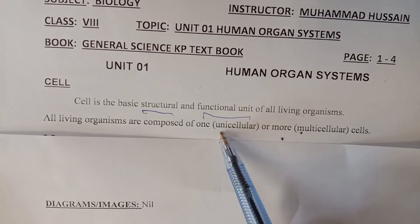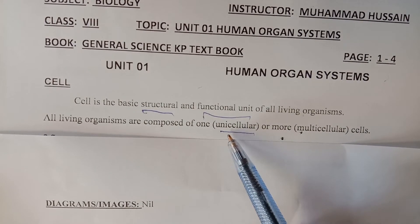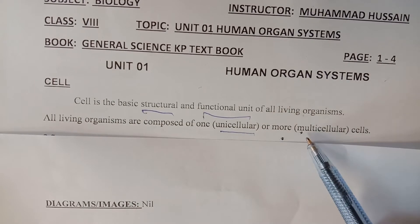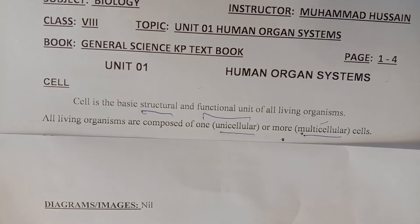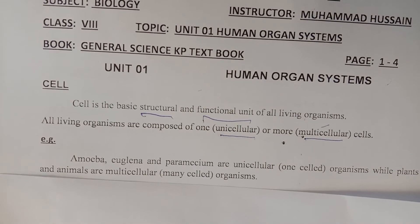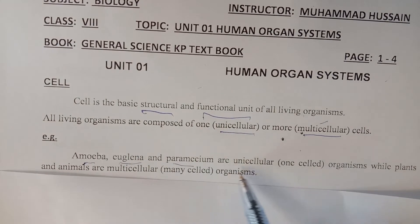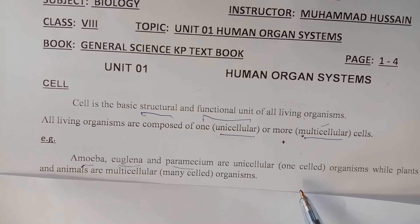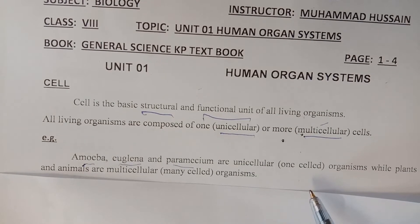We have two types of living organisms. Unicellular organisms are those containing only one cell. Examples of unicellular organisms include amoeba, euglena, and paramecium — they consist of only a single cell. Organisms containing more than one cell are called multicellular organisms.